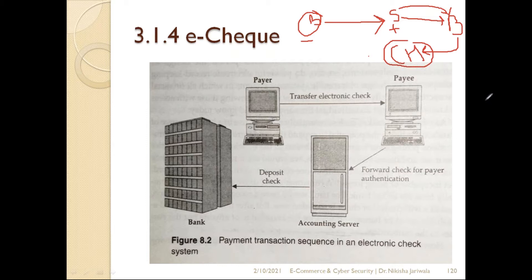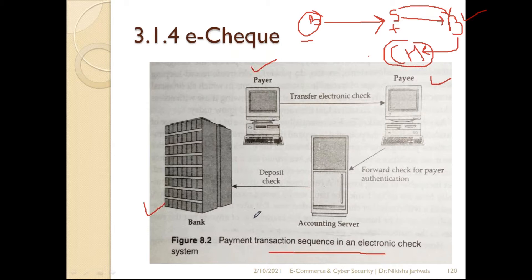The same process is present in the electronic check system. The buyer and seller who were physical persons will now be computers. The bank remains a physical entity, but these activities will be performed electronically. Instead of a clearing house, there will be a particular accounting server here, which will authenticate and verify all the things.